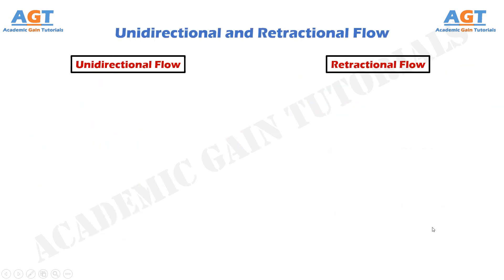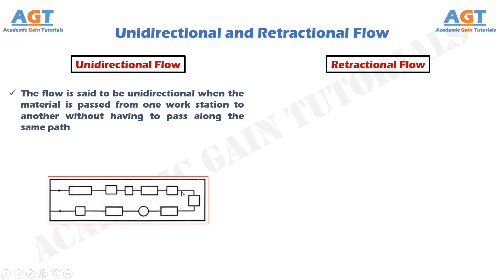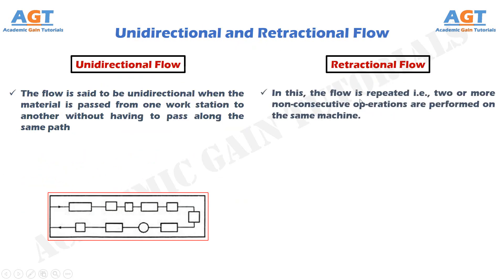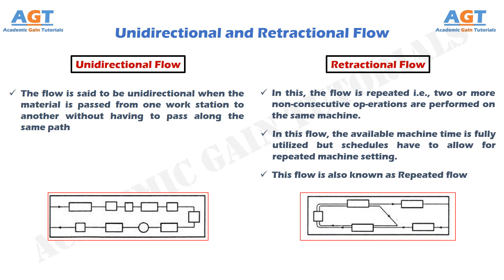Unidirectional and retractional flow. The flow is said to be unidirectional when the material is passed from one work station to another without having to pass along the same path. The horizontal flow patterns explained here are all unidirectional type of flow. On the other hand, in retractional flow, the flow is repeated — that is, two or more non-consecutive operations are performed on the same machine. The aspect of flow is decided by consideration of machine utilization. In this flow, the available machine time is fully utilized, but schedules have to allow for repeated machine setting and for intermittent localized halts or stops in the production line each time a machine is switched over from one operation setting to another. This flow is also known as repeated flow.